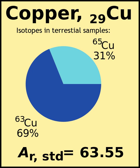An example of why terrestrial origin must be specified in giving standard atomic weight values is the element argon. Between locations in the Solar System, the atomic weight of argon varies as much as 10%, due to extreme variance in isotopic composition. Where the major source of argon is the decay of 40K in rocks, 40Ar will be the dominant isotope. Such locations include the planets Mercury and Mars, and the Moon Titan. On Earth the ratios of the three isotopes 36Ar, 38Ar, 40Ar are approximately 5 to 1 to 1600, giving terrestrial argon a standard atomic weight of 39.948.